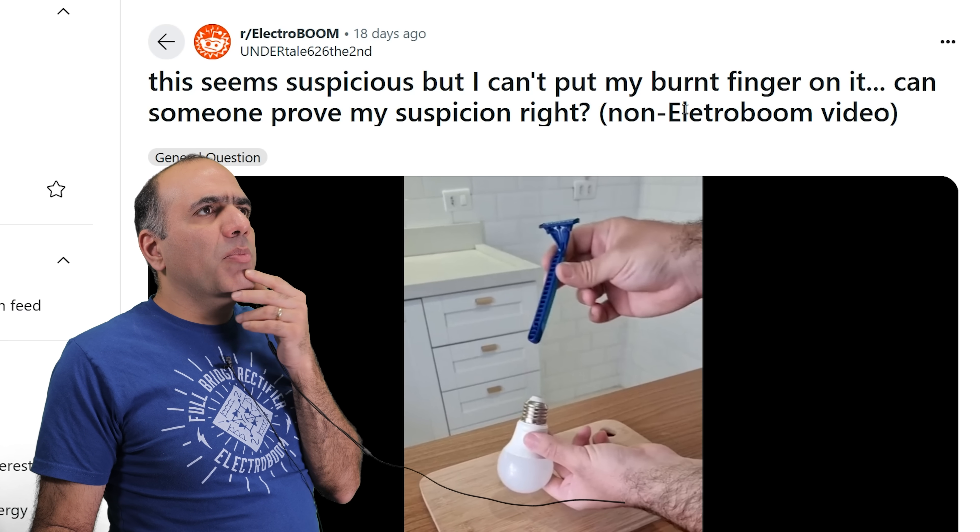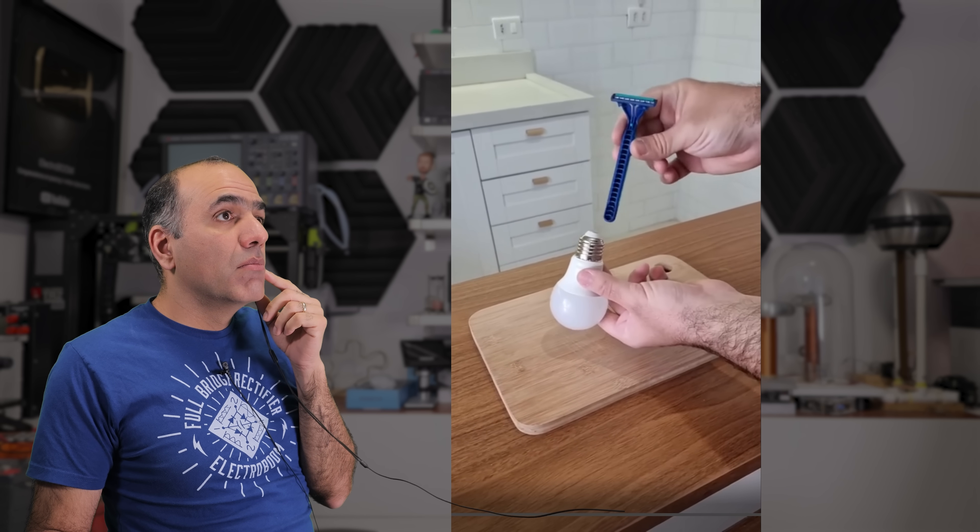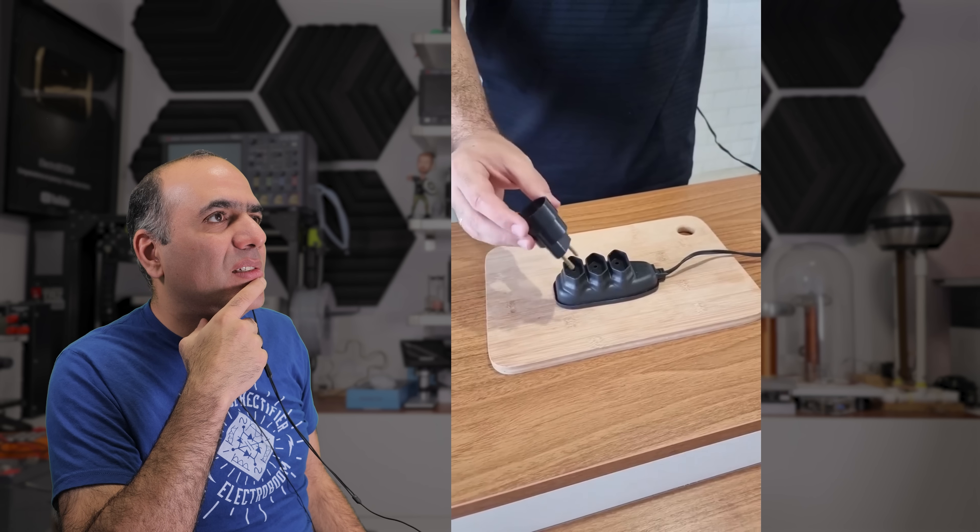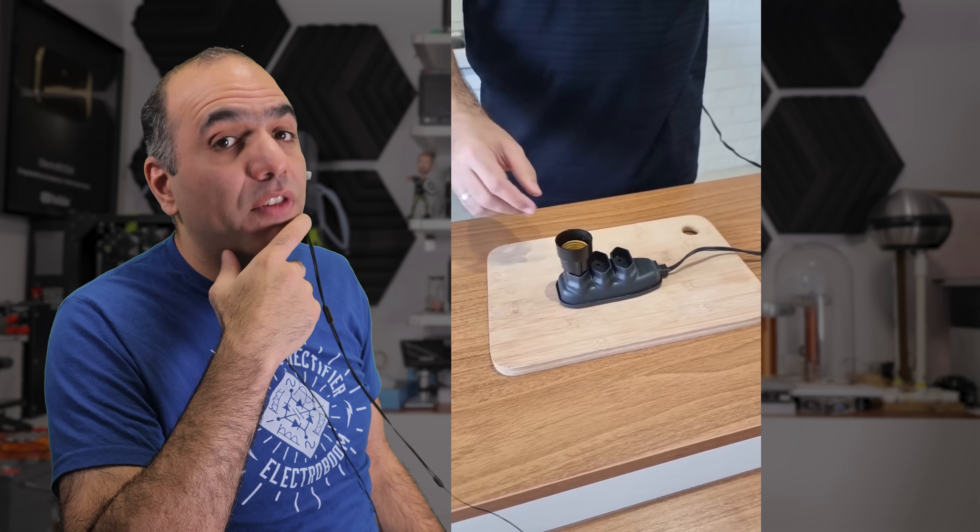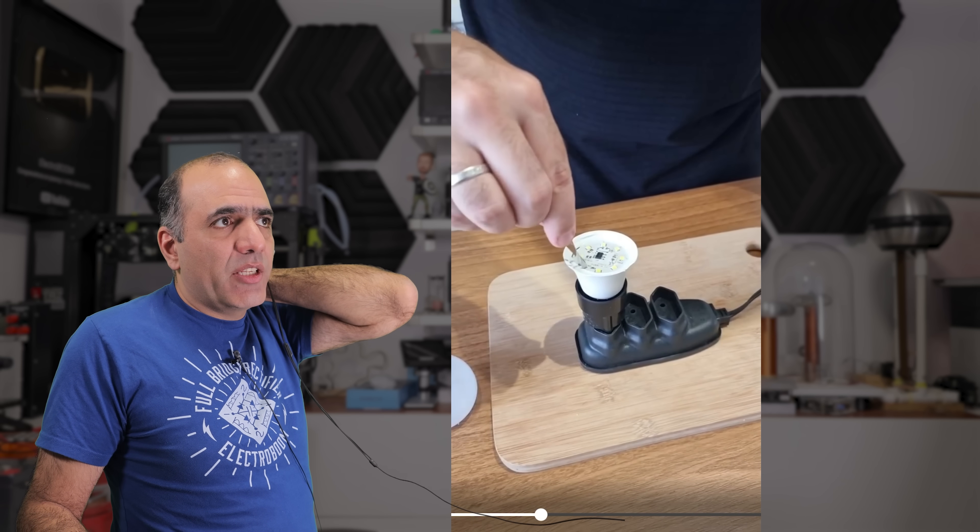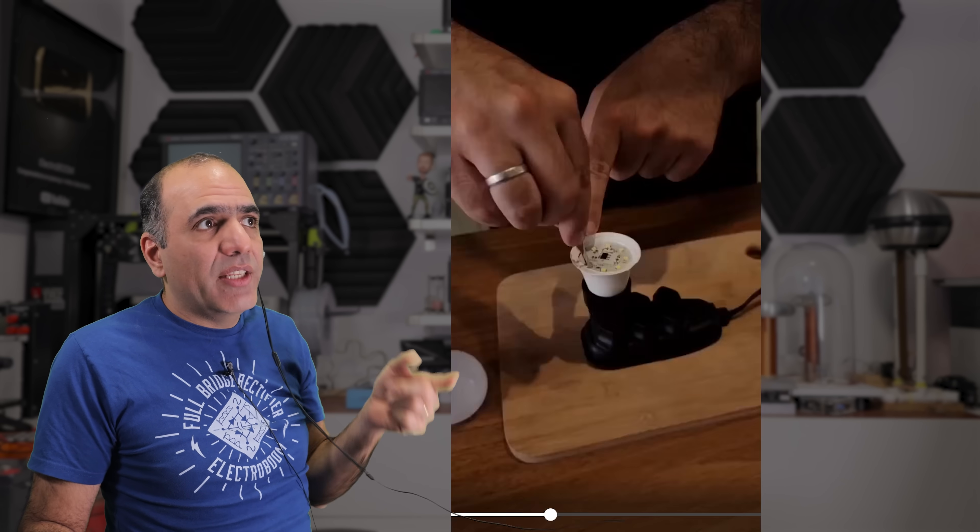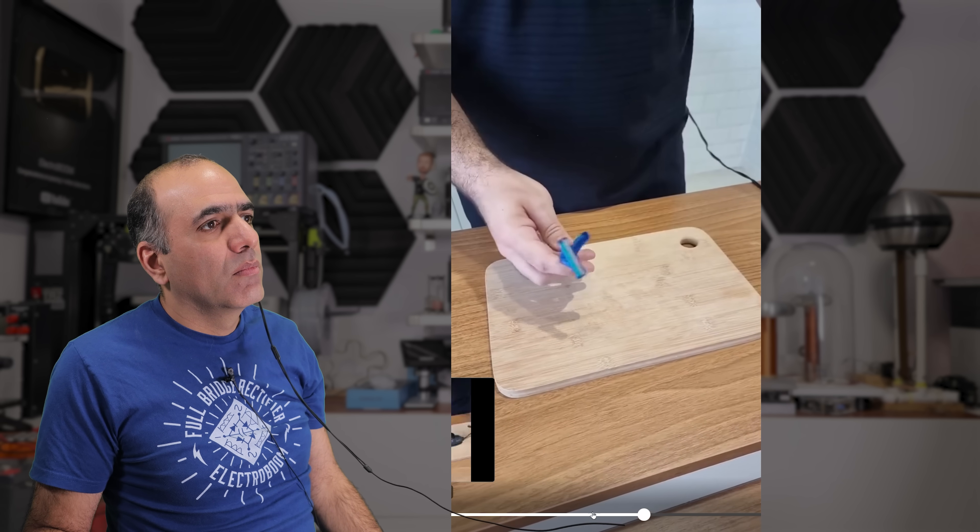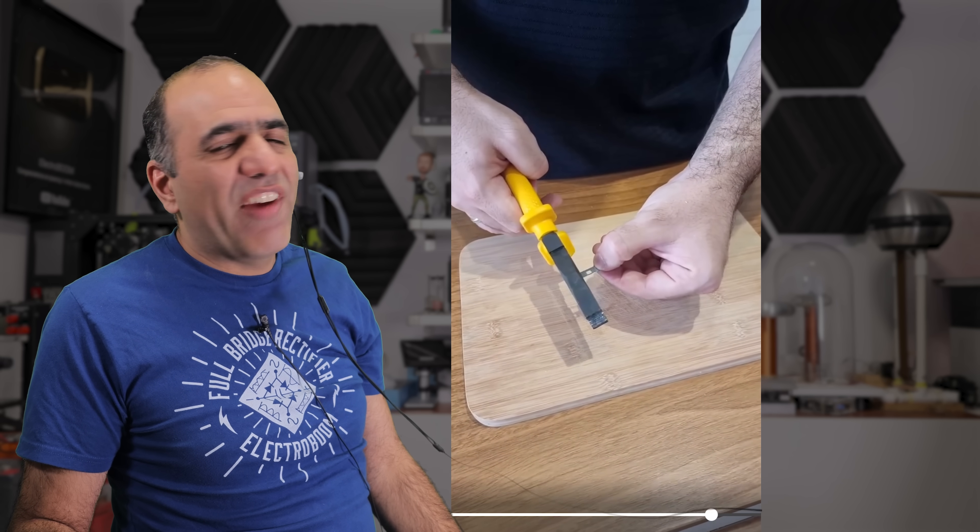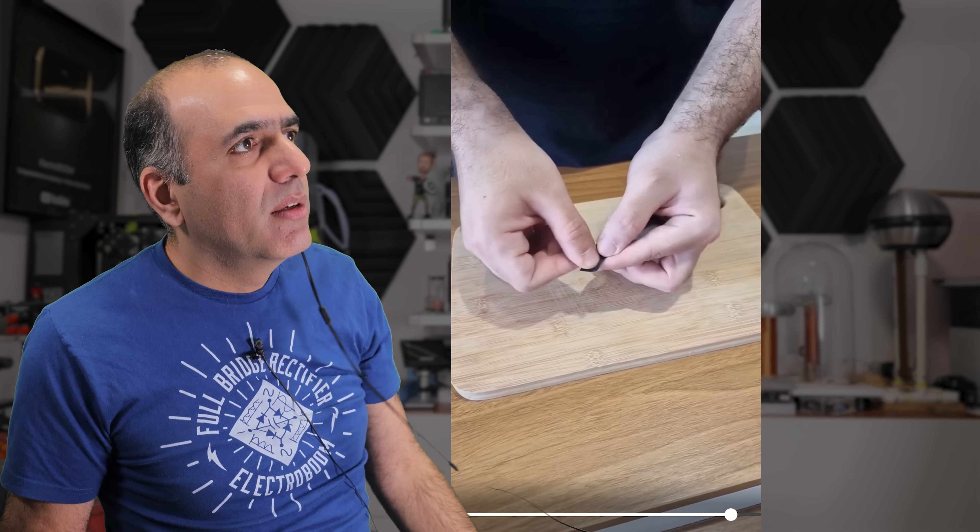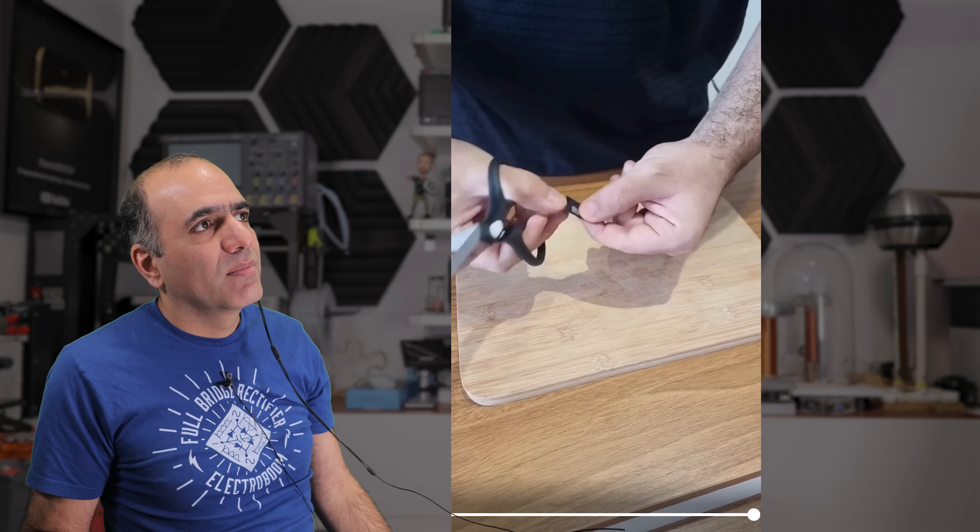This seems suspicious but I can't put my burnt finger on it. Just place a razor blade on the burnt out LED bulb and it will work perfectly again. Oh that's a joke. This incredible secret was discovered by an electrician. So he has a defective light bulb and the reason it's broken is because one of the LEDs is burnt out. Remove all the excess from the burnt out LED. We're gonna need an old razor blade. Why would you use a razor blade to fix it though?